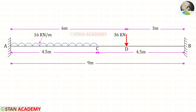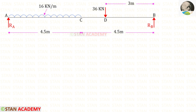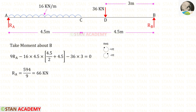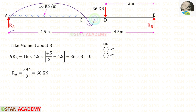Using the moment area method we are going to find the moments MA and MB. For that we have to convert this fixed beam into a simply supported beam. In this simply supported beam we have to find the reactions RA and RB. To find RA, I am taking moment about B. RA is acting in the clockwise direction so it will be positive, and the distance is 9, so 9·RA.